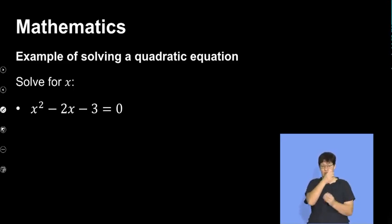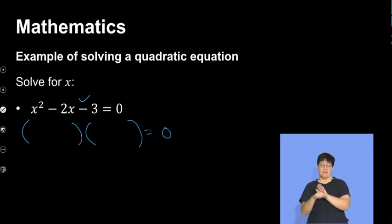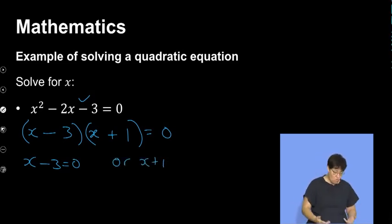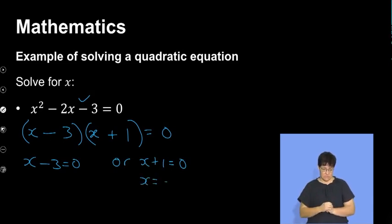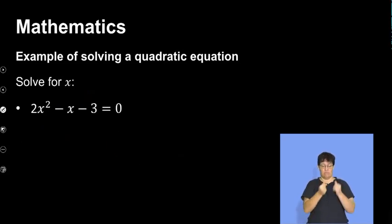So the typical example of solving for x using factorization: is it in standard form? Yes. Is there a common factor? No. Then go straight to factorization. The last term is negative so my two brackets will be a plus and a minus, equal to zero. So it becomes (x − 3)(x + 1) = 0, giving x minus 3 equals zero or x plus 1 equals zero. Therefore x equals 3 or x equals negative 1 — those are my two solutions.